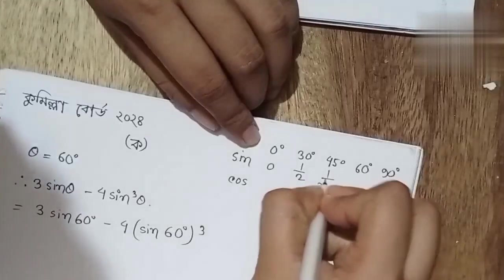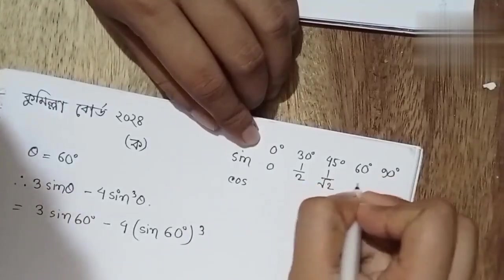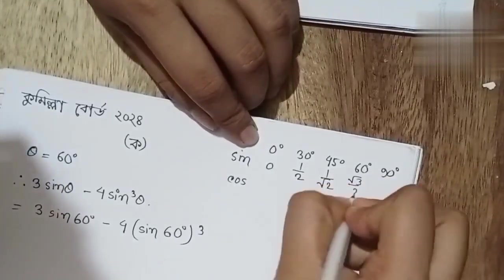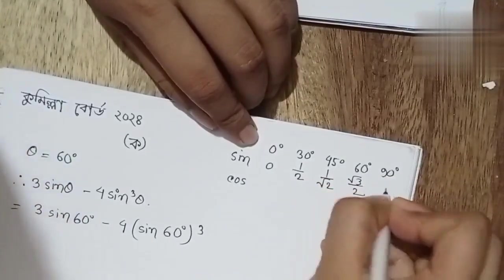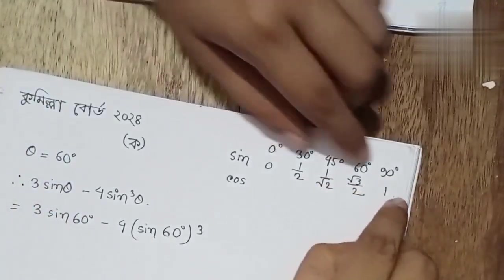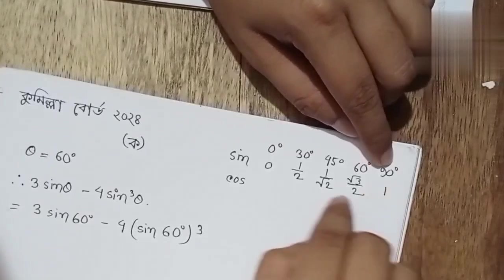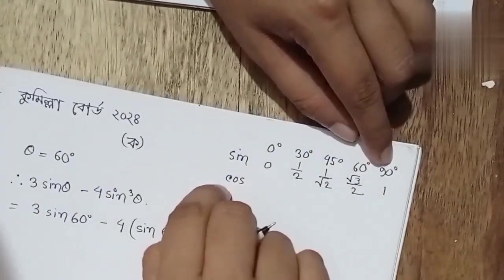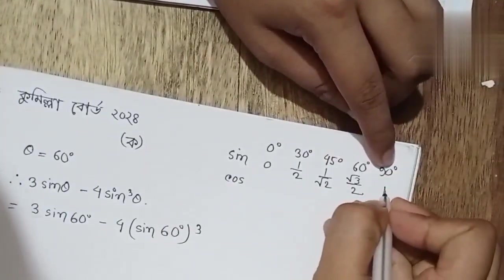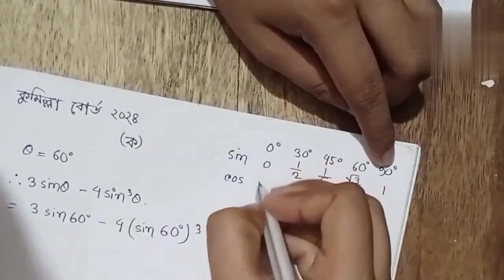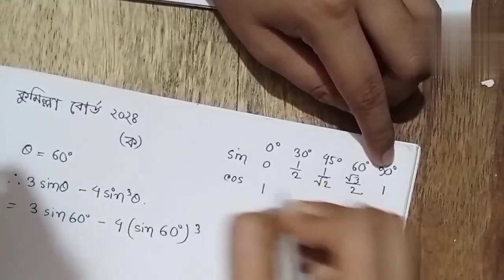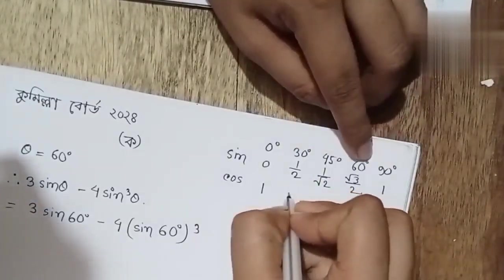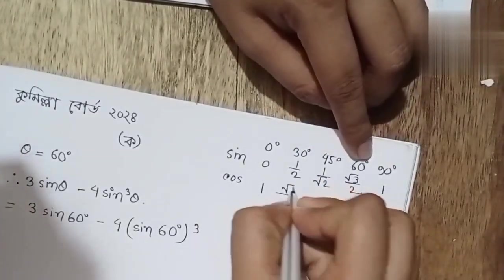Sin 45 degree is 1 by root 2, sin 60 degree is root 3 by 2, sin 90 degree is 1. Cos 0 degree is 1, cos 30 degree is root 3 by 2.